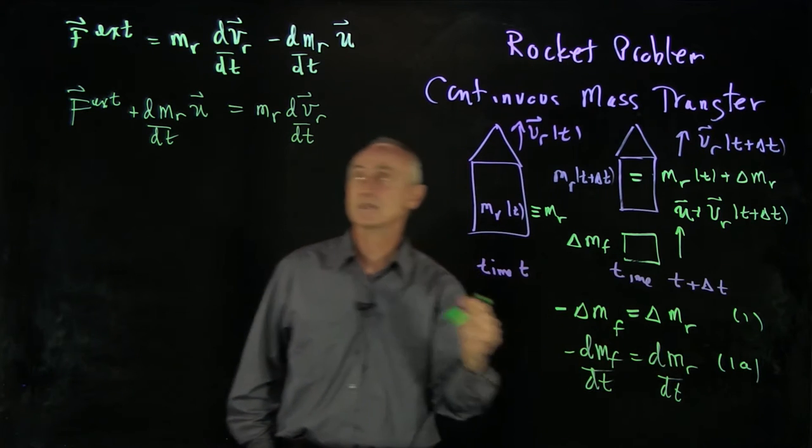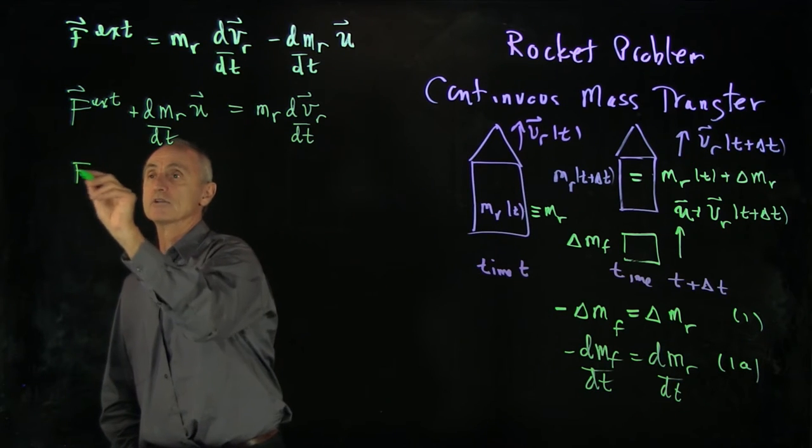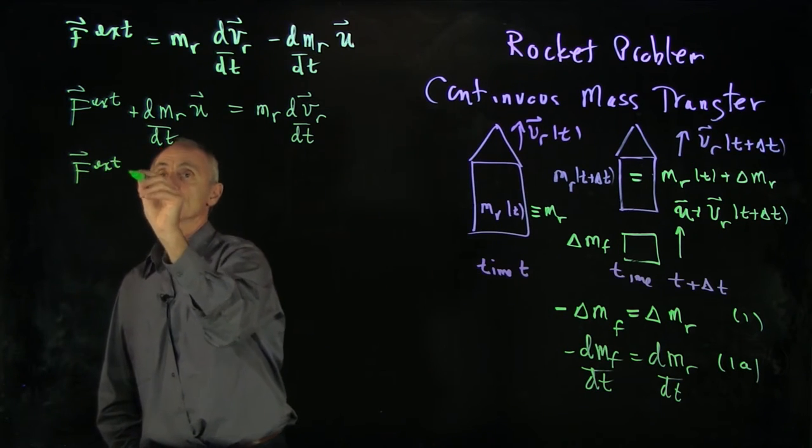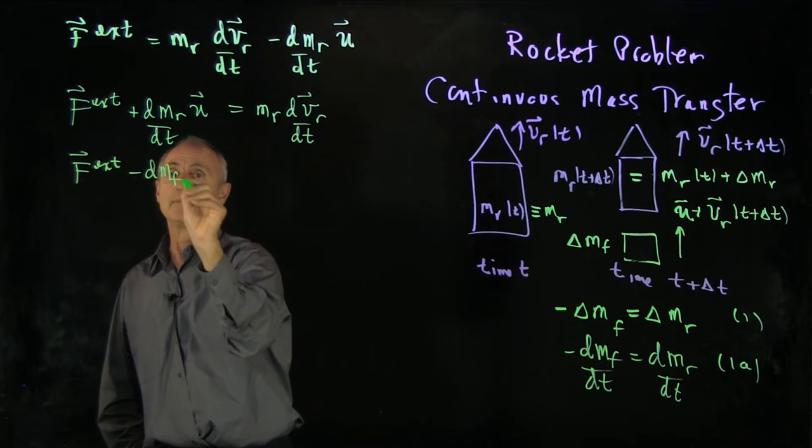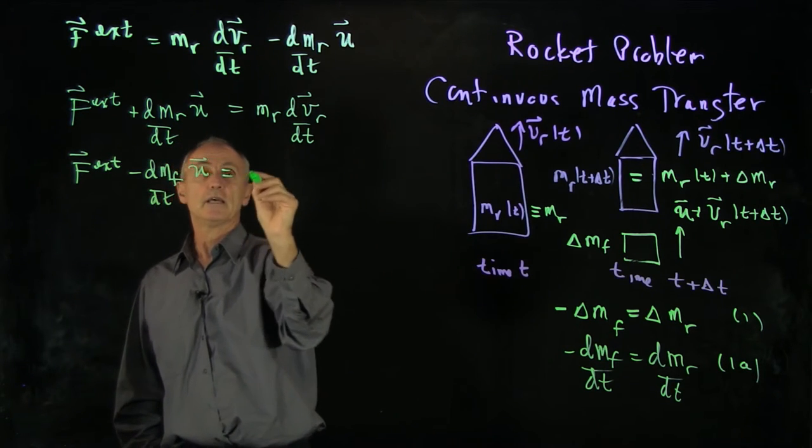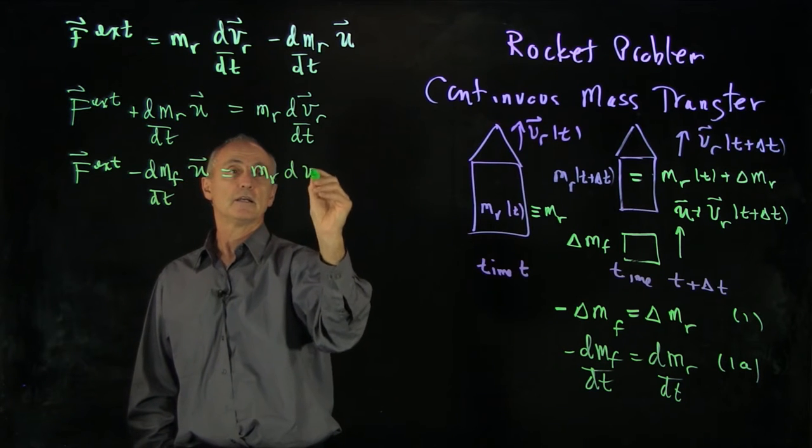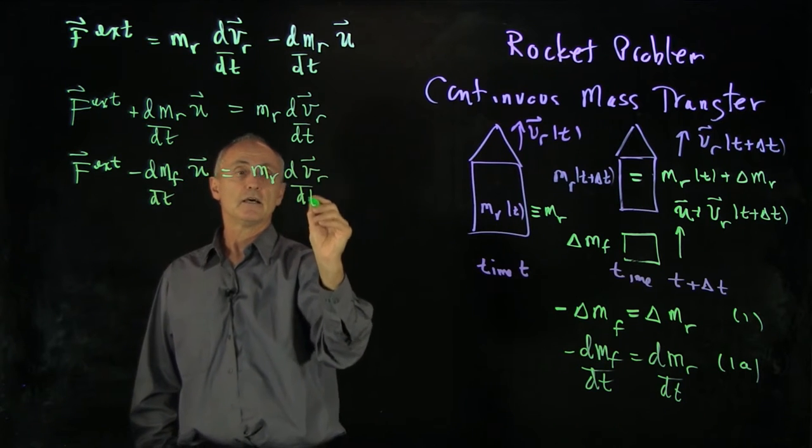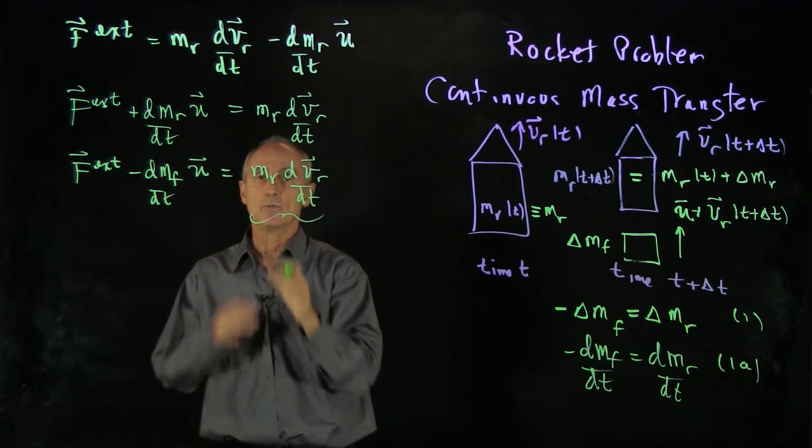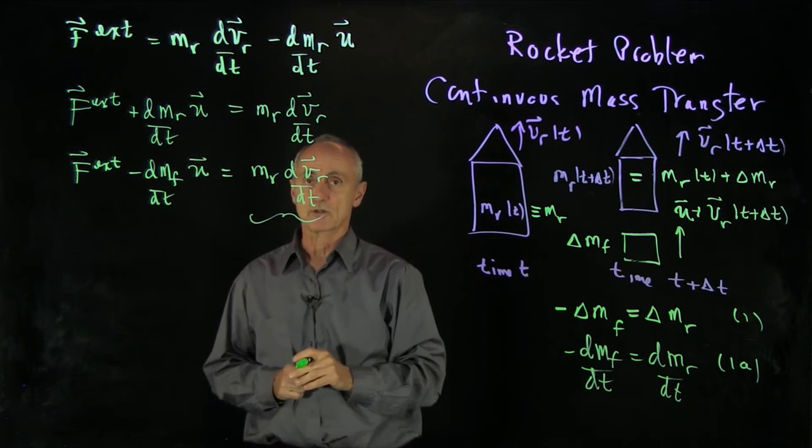Now, separately, let's make this substitution again and go back to our fuel term. So that's minus dmf dt u equals mr dvr dt. Now, notice that over here, we have mass times the acceleration of the rocket.